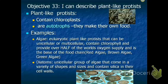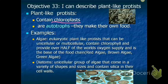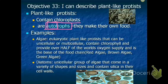Objective 33: I can describe plant-like protists. Plant-like protists contain chloroplasts — that green pigment that helps with photosynthesis and making their own food. Since they can make their own food, plant-like protists are autotrophs. The root word 'auto' means self, so an autotroph makes food for itself. Examples of plant-like protists are algae — that green, slimy stuff found in swimming pools, lakes, or any moist environment.